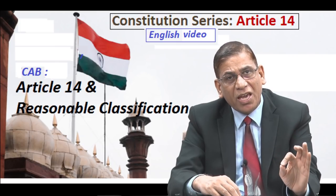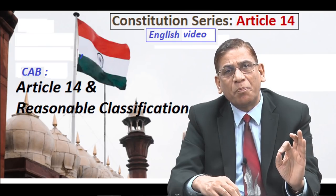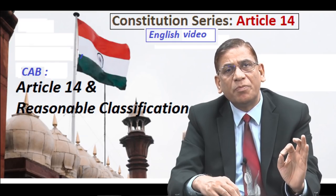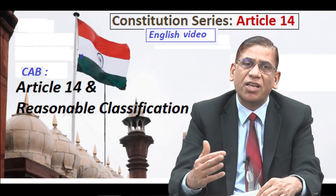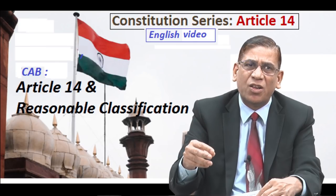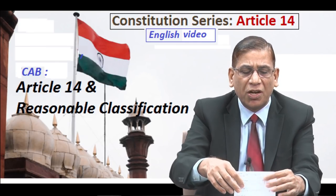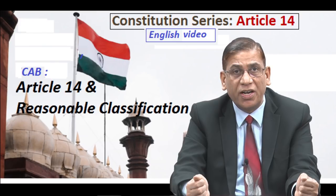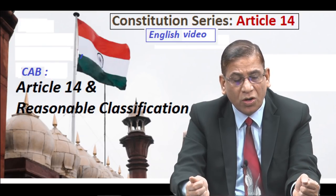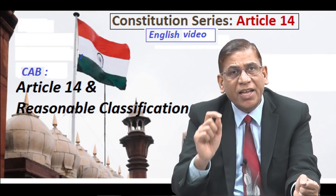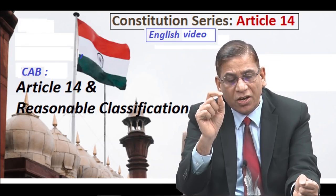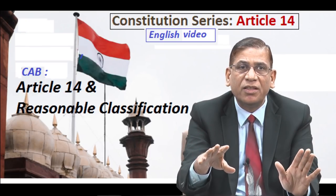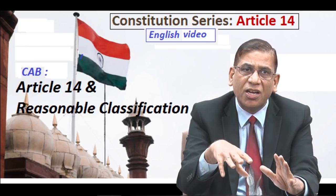Similarly in CAB, the rational object should be that if people are persecuted in their countries and want refuge in India, we must make them eligible for citizenship. Whether their religion is X or Y is as irrelevant as the distribution of seats based on districts. Moreover, in Chitra Ghosh versus Union of India, a 1969 Supreme Court judgment, the Supreme Court explicitly said that any classification based on language, religion, race, sex, or place of birth is not reasonable classification. Therefore, this classification based on religion must fall.